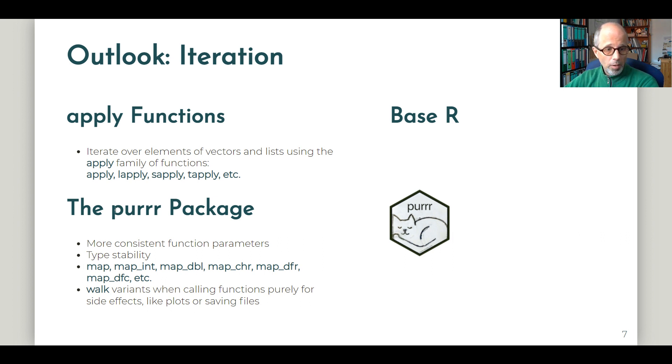If you get more into functional programming, I recommend taking a look at the purrr package. It does similar things to these base R functions, but it's got a few advantages. Most importantly, the function parameters are named more consistently, which is very convenient for programming, and you get type stability, which is especially not the case for sapply.